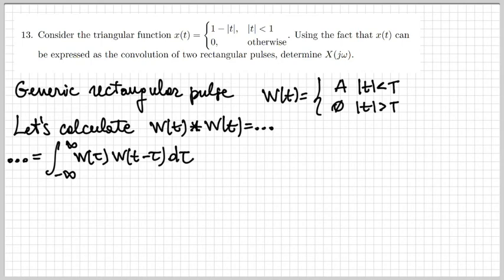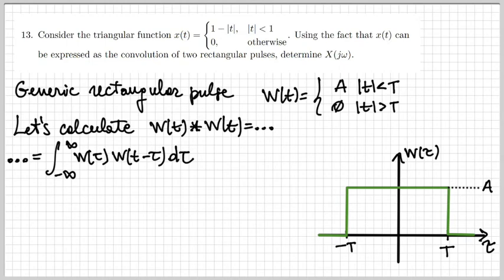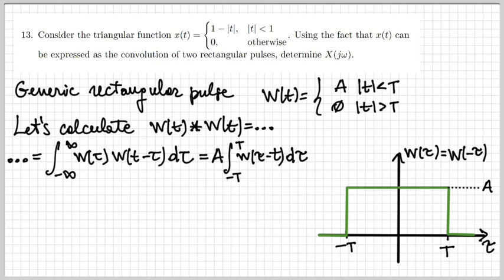The convolution is the integral of W of τ · W of t minus τ dτ. This simplifies because W of τ is zero outside of the interval minus T to T, and it's also an even function, so W of τ equals W of minus τ. The integral becomes A times the integral between minus T and T of W of τ minus t. I need to check what happens as W of τ is shifted by a quantity t — the result of this integral will be different depending on the value of t.